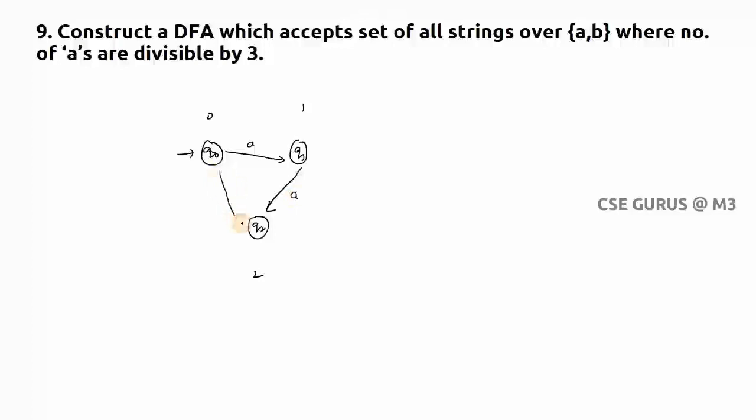If I give third 'a' it has to go to remainder zero state. Three a's means again remainder zero. Fourth 'a' remainder one, like this you need to consider.